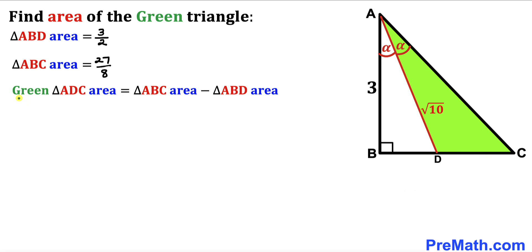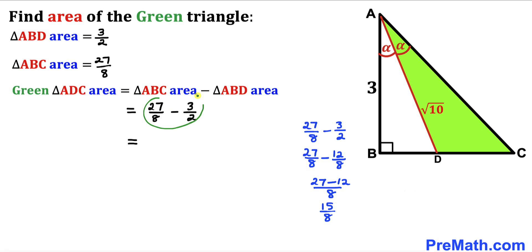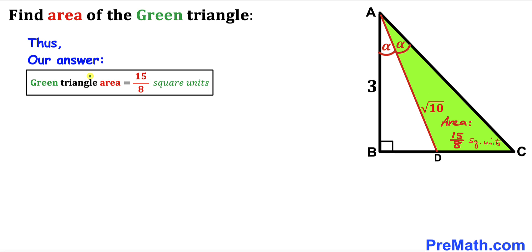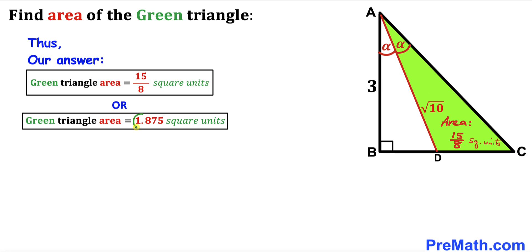Finally, the area of the green shaded triangle ADC = area of ABC − area of ABD = 27/8 − 3/2 = 27/8 − 12/8 = 15/8 square units. In decimal, this equals 1.875 square units. Thanks for watching, and please don't forget to subscribe to my channel for more exciting videos!